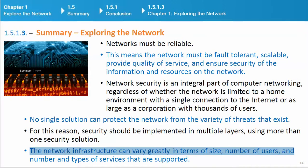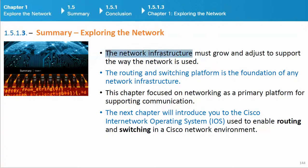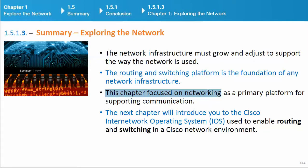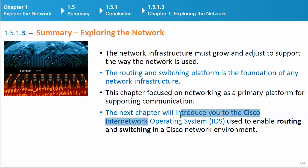The network infrastructure must grow to support the way the network is used. The routing and switching platform is the foundation of any network infrastructure. This chapter focused on networking as a primary platform for supporting communication. The next chapter will introduce you to the Cisco Internetwork Operating System (IOS), used to enable routing and switching in a Cisco network environment.